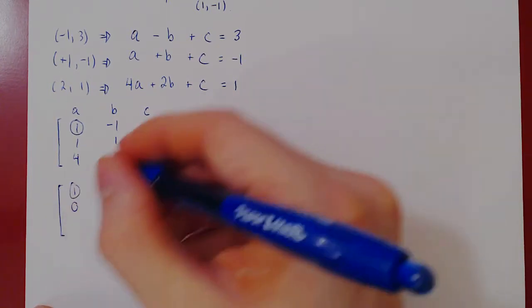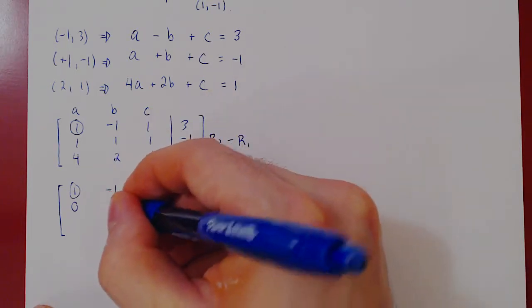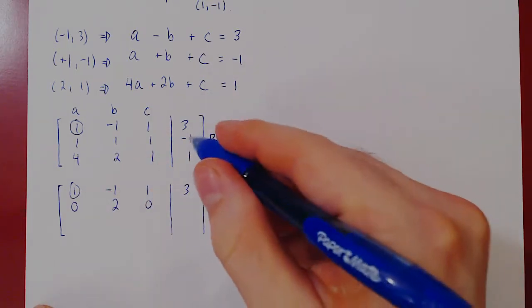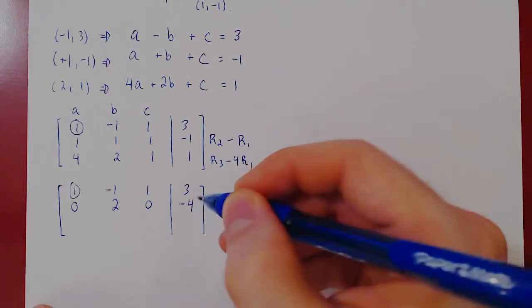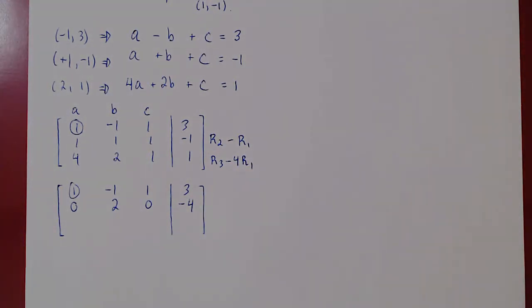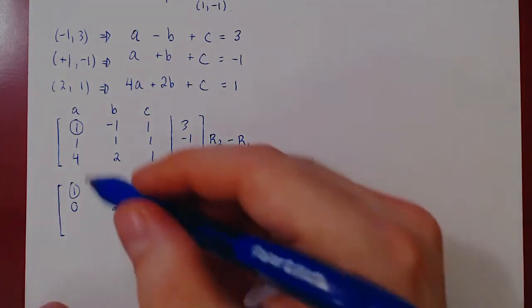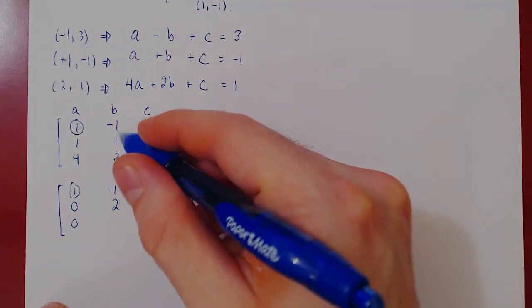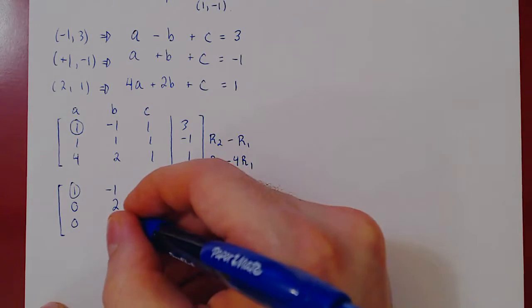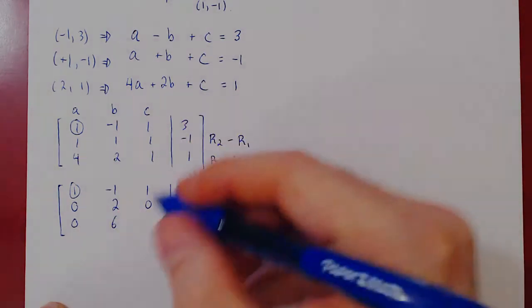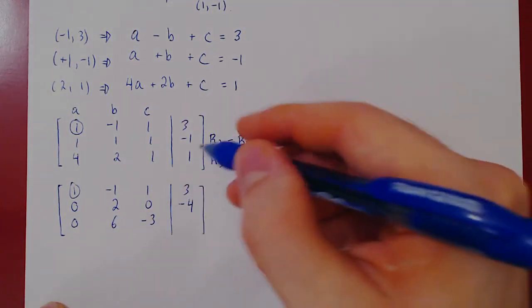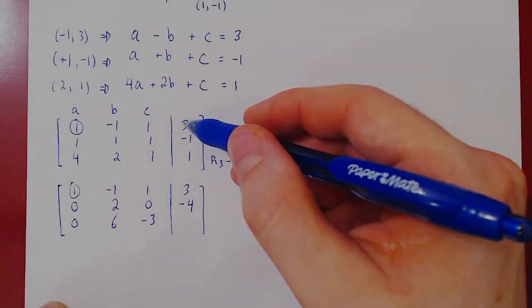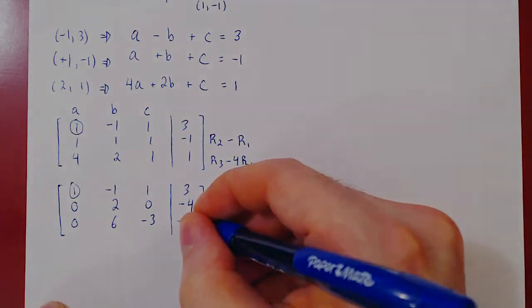One minus one is zero. One minus negative one is two. One minus one is zero. Negative one minus three, negative four. Four minus four is zero. Two minus four times negative one is plus four is six. One minus four, negative three. One minus four times three is minus twelve, negative eleven.